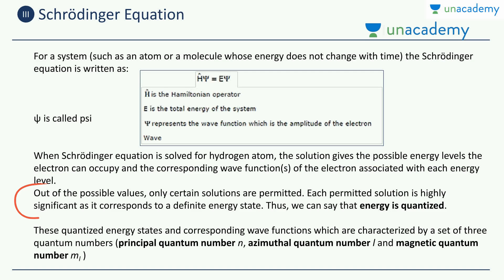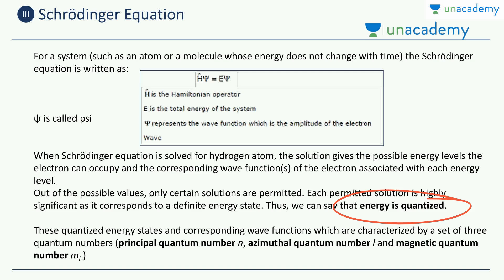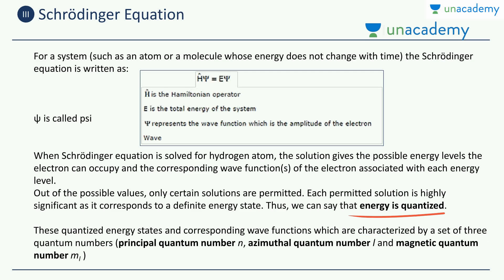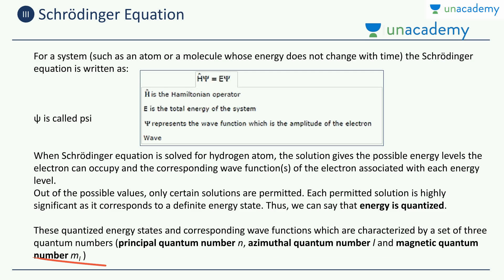Out of the possible values, only certain solutions are permitted — not every solution is allowed. Each permitted solution is highly significant as it corresponds to a definite energy state. Thus we can say that energy is quantized. The quantized energy states and corresponding wave functions are characterized by three quantum numbers. You can characterize any energy state using just three quantum numbers: the principal quantum number N, the azimuthal quantum number L, and the magnetic quantum number M. If you have these three numbers, you can state what is the energy state of an electron.